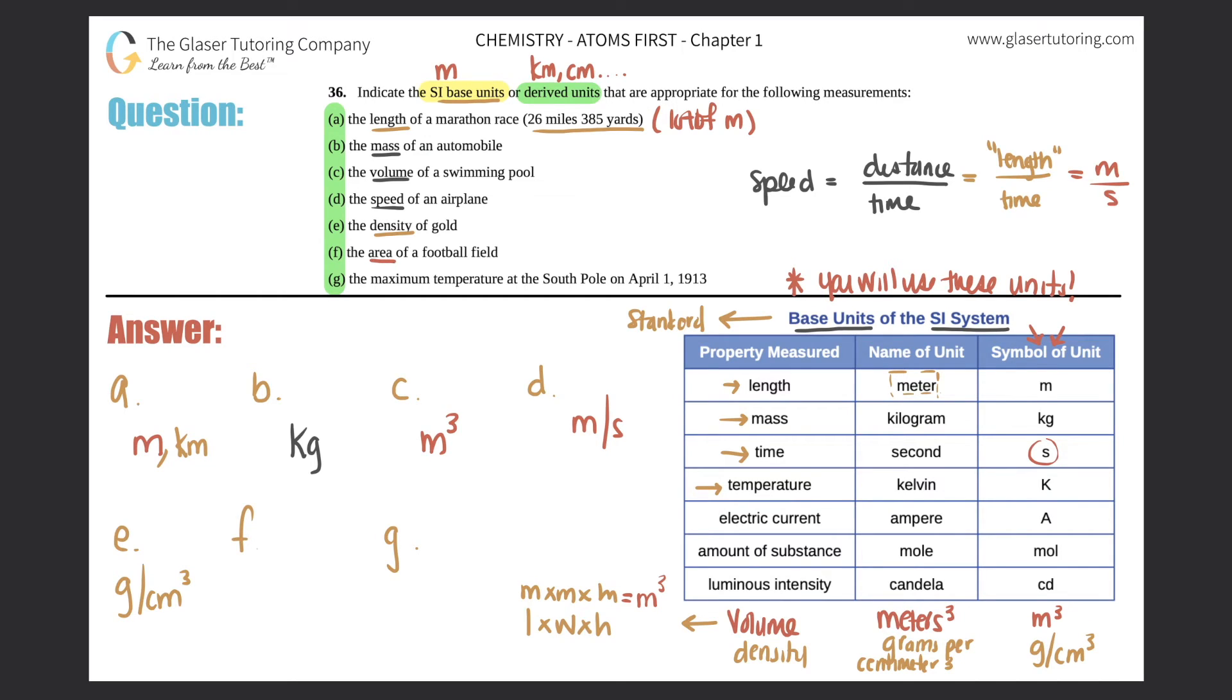F, the area of a football field. Well, I'll put area over here. What does area equal? Area is length times width, kind of like how volume was length times width times height, but area is just length times width. So here the length was in meters, and the width, it's still kind of like a distance, so it would still be meters. So area would be m times m, and that would turn into m². So that would be the answer for f, m². So m² is always an area, m³ is the volume.